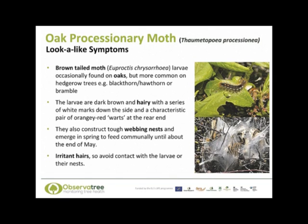Another native caterpillar which can be confused with oak processionary moth is the brown-tailed moth caterpillar. Its larvae are occasionally found on oaks, although they are more common on hedgerow trees such as blackthorn and hawthorn. The larvae are dark brown and hairy like oak processionary moth, although they have white marks down their sides and a characteristic pair of orangey-red warts at their tail. The brown-tailed moth also constructs tough webbing nests and the caterpillars emerge in spring to feed communally until about the end of May. The hairs of the brown-tailed moth are also irritating, so you should avoid any contact with the larvae or their nests.